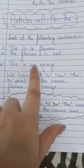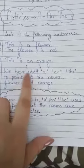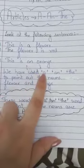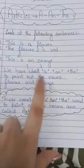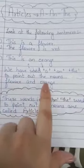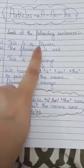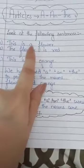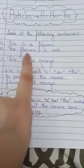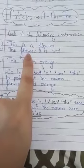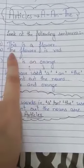In the first sentence, the noun is 'flower' and what we have used is 'a'. In the second sentence, the word is again 'flower' and what we have used is 'the' — 'the flower is red'. In the third sentence, we have used 'an' — 'this is an orange'.